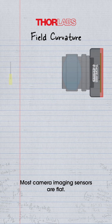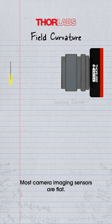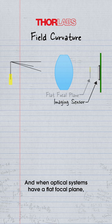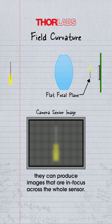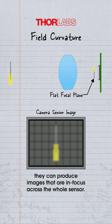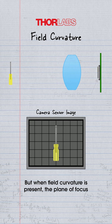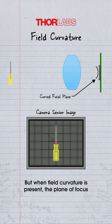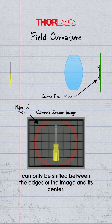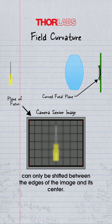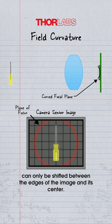Most camera imaging sensors are flat, and when optical systems have a flat focal plane, they can produce images that are in focus across the whole sensor. But when field curvature is present, the plane of focus can only be shifted between the edges of the image and its center.